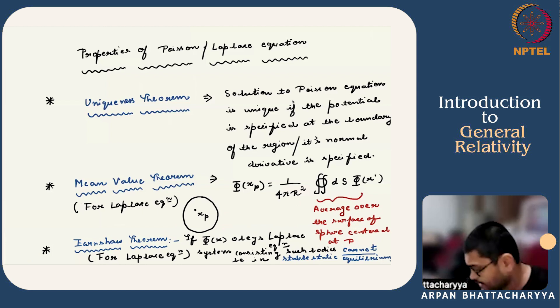Last is the Earnshaw theorem. It says that if Φ obeys the Laplace equation, a system consisting of such bodies cannot be in stable static equilibrium. The implication of this is that our solar system or even our atoms cannot consist of static bodies. The constituents must move. We encourage you to look into the proof of these three theorems. You will encounter them in electrostatics as well.